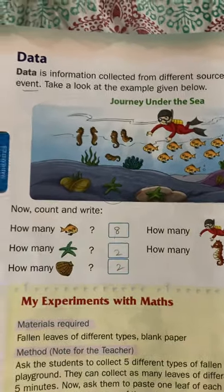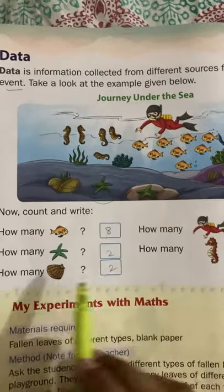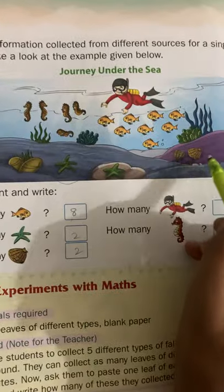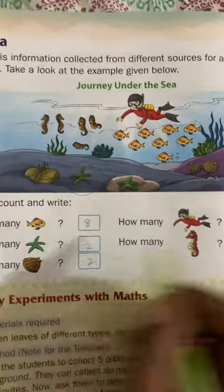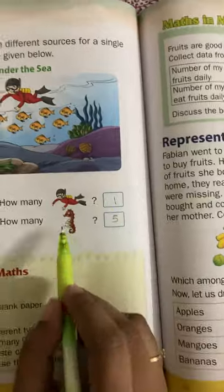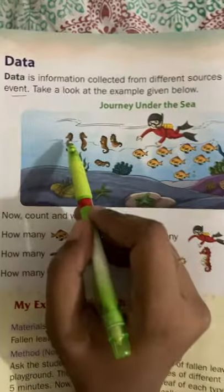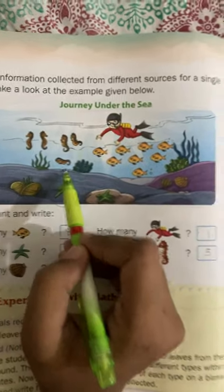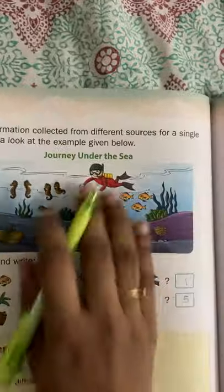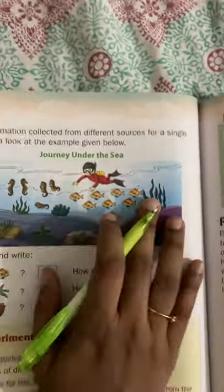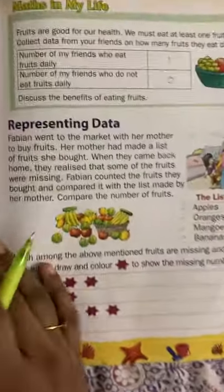Starfish: 1, 2 — two starfish. Shells: 1, 2 — two shells. Man: 1. Seahorse: 1, 2, 3, 4, 5 — five seahorses. This is the data from the journey under the sea.